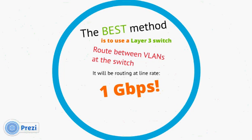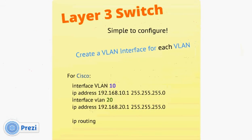The best method is to use a Layer 3 switch, which routes between VLANs at the switch at line rate — 1 gigabit per second. Configuration is simple: after normal VLAN setup, in Cisco you enter 'interface vlan 10', assign an IP address, then 'interface vlan 20' and assign another IP address, then give the command 'ip routing'. That tells the switch it's now a Layer 3 switch. It routes between VLANs at line rate — 100 Mbps on a 100 Mbps switch, gigabit on a gigabit switch.